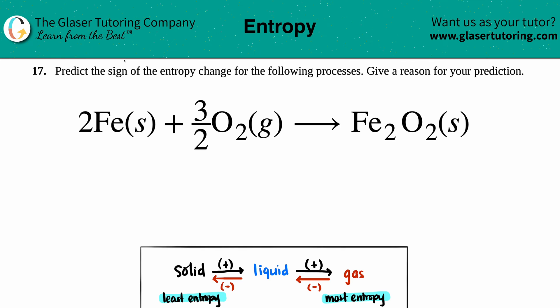Number 17: Predict the sign of the entropy change for the following processes and then give a reason for your prediction. Okay, so in this case we have a balanced equation. If they give you a balanced equation and they're looking for the sign of the entropy, you don't really have to necessarily focus on what compounds or molecules that they give you. What's more important is the states that they're in.